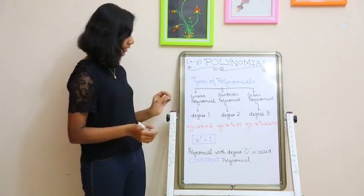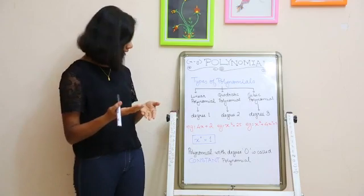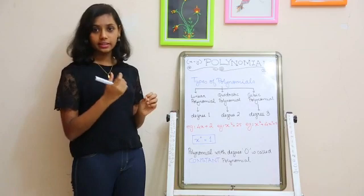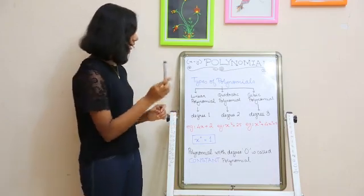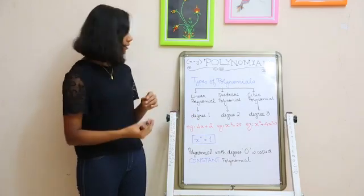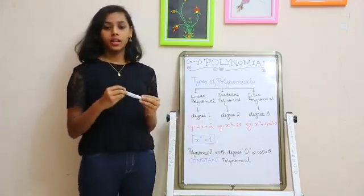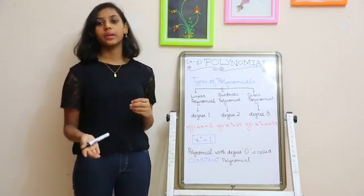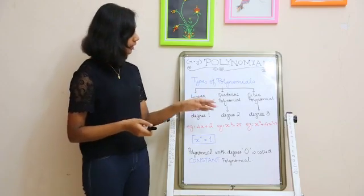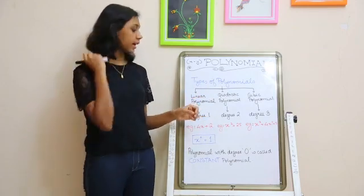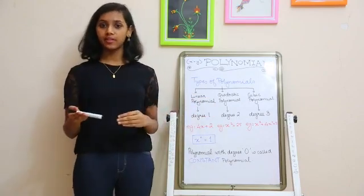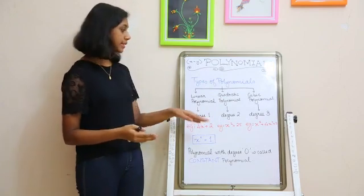For a linear polynomial, an example is 4x + 2 — the highest degree is 1. For a quadratic polynomial, an example is x² + 25 — the highest degree is 2. For a cubic polynomial, an example is 3x³ + 4x² + 5 — the highest power is 3, so the degree is 3 and it is a cubic polynomial.